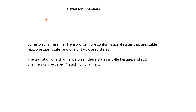Another property of ion channels that is important for the generation of action potentials is that the channels can be gated — meaning the channels may be present in different stable states, either open or closed, and can transition between them. This process of going from an open state to a closed state or vice versa is known as gating, and channels that have gating are known as gated ion channels. Not all channels are gated: leakage channels — some sodium, potassium, and chloride channels — are always open and do not have a closed state. These are non-gated or passive channels. Gated ion channels play an important role in neural activity in determining responses to various kinds of inputs.